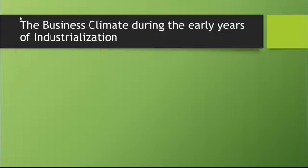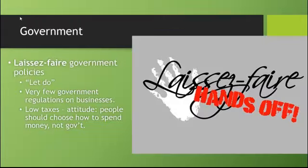Let's talk about the business climate during the early years of industrialization — roughly 1870 forward. The government during this time had a policy called laissez-faire, which means 'let do' or 'hands off.' Laissez-faire policies are when the government puts very few rules and regulations on businesses. When we talk about very few regulations during this time, we mean almost no regulations. Child labor is legal. There's really no health and safety laws, no pollution laws, no minimum wage — very few rules governing what businesses are doing.